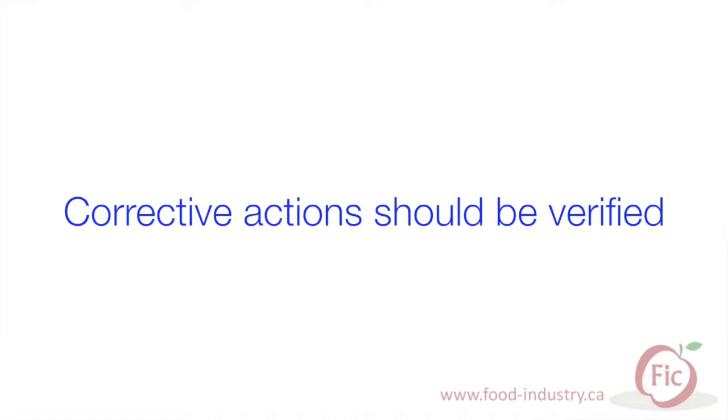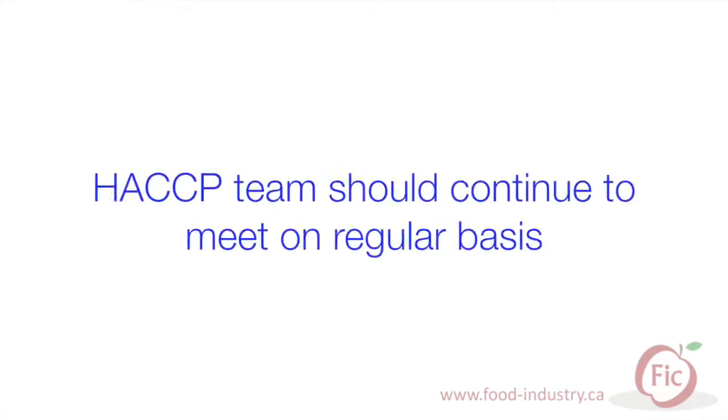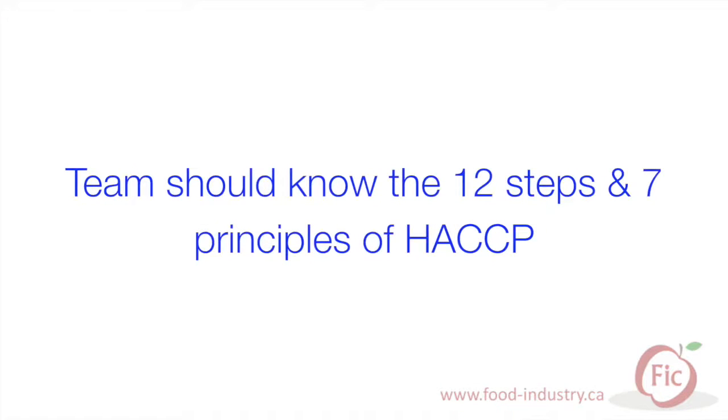The corrective actions should be verified to ensure they are effective. After HACCP has been implemented, they should continue to meet on a regular basis, perhaps every six months, and whenever changes need to be made to the HACCP plans. The HACCP team may be asked for an interview by the auditor to test their knowledge about HACCP. At minimum, they should know the 12 steps for developing a HACCP program as well as the seven principles.